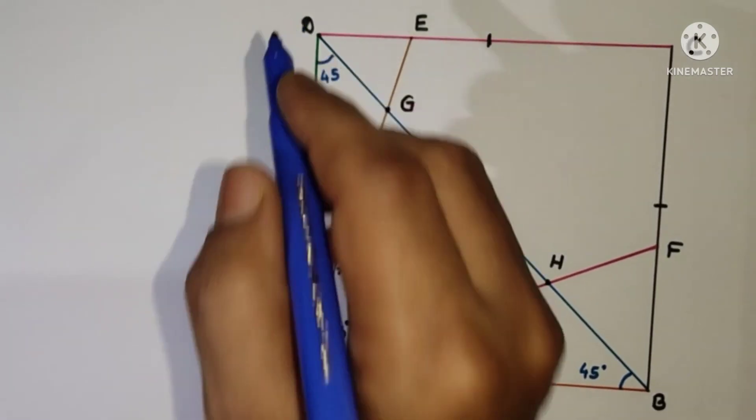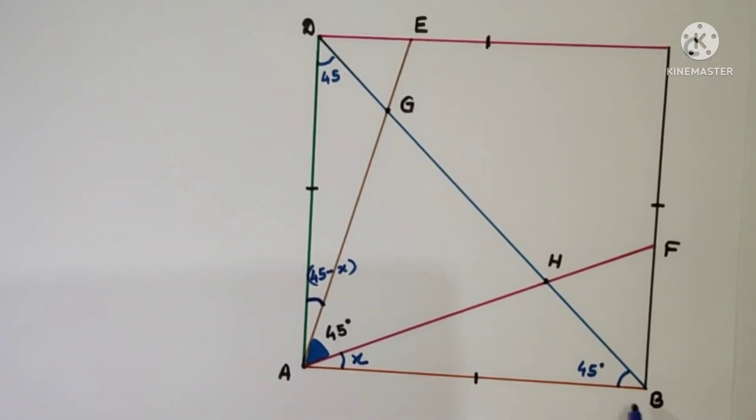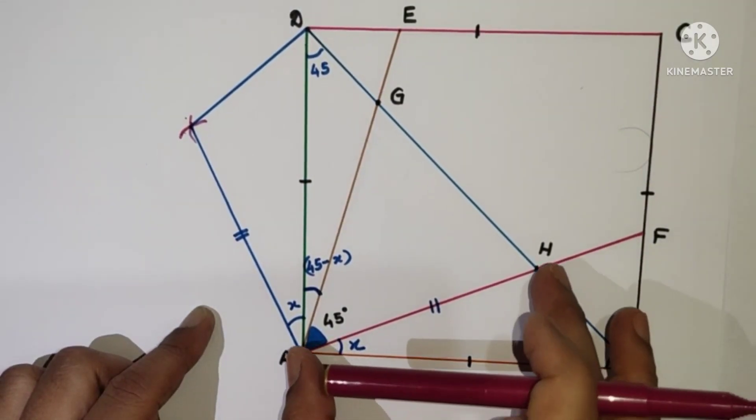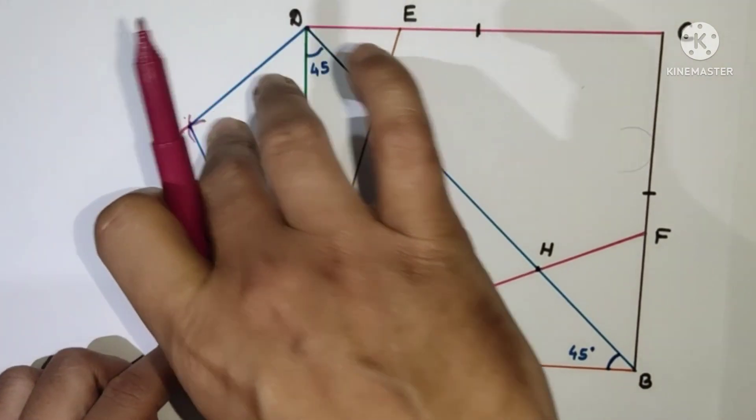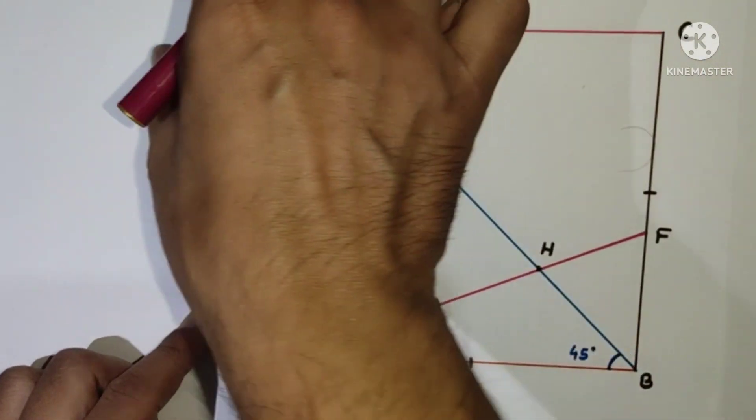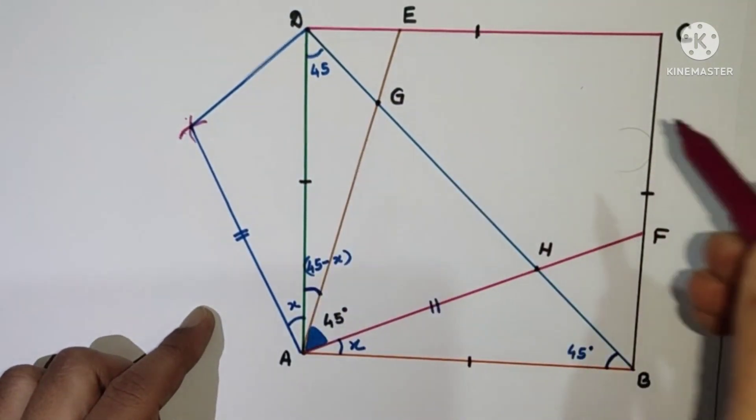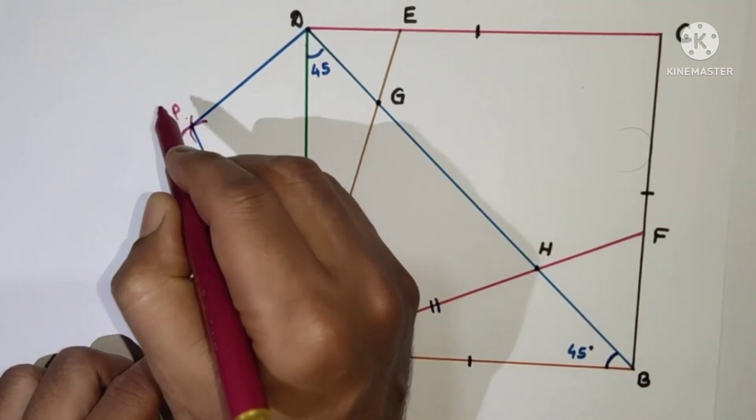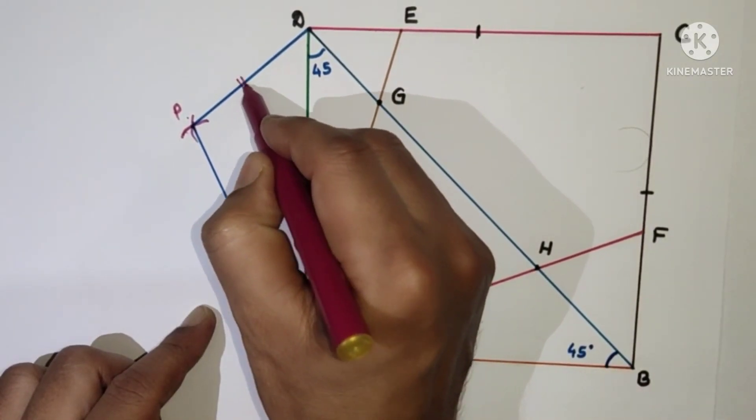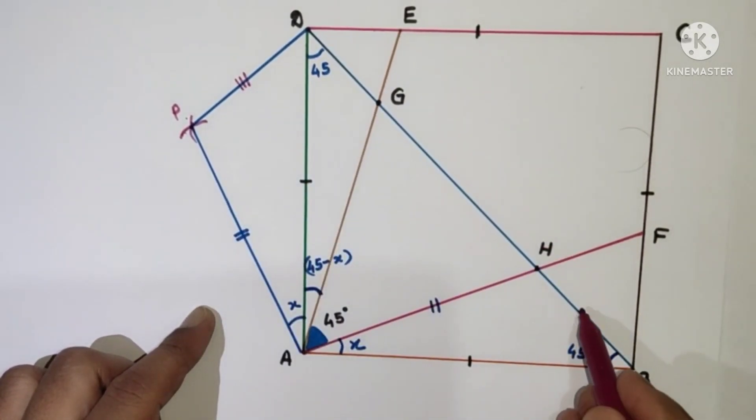This angle is 45 minus X. AB is equal to AD and angle ABH is 45. The construction is take an arc AH and cut here and take out this BH and cut here. So let the two arcs intersected point P.